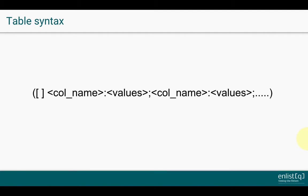As a reminder, here's what the syntax looks like. First you have open parentheses — we'll ignore the brackets for now — then you specify the name of the column, colon, and then the values, and then a semicolon followed by other columns and values that you want to add. It's a pretty simple, straightforward syntax. It does take a while to remember all the nitty-gritty details, but once you master it, it will come to you naturally.